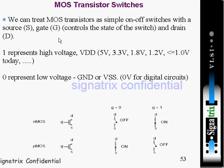Source and gate control the state of the switch and drain. One represents high — when you are applying a one at the gate terminal, that means you are applying a high voltage. High voltage is VDD, which may be 5 volt, 3.3 volt, 1.8 volt, or 1.2 volt, depending on what sort of voltage you are using for your circuit.